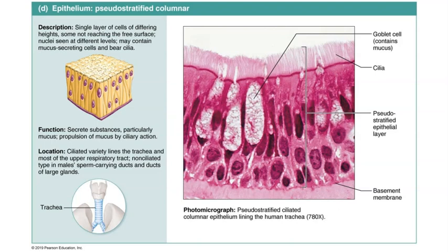Finally, we have pseudostratified columnar epithelium, the last type of simple epithelium. It is a single layer of column-shaped cells; however, some cells do not extend all the way to the apical surface, making them appear as though they are stratified or layered, but they are not. Hence the name pseudostratified, because the prefix pseudo means false.